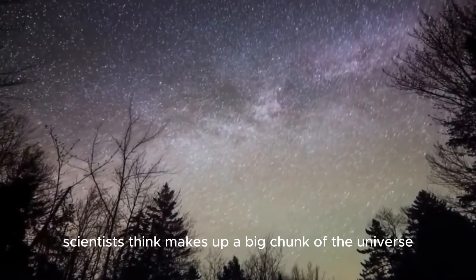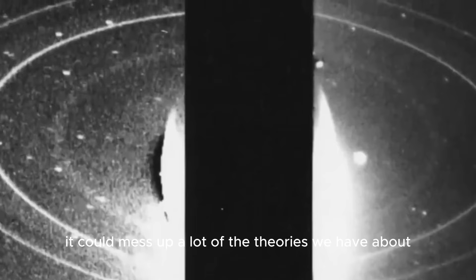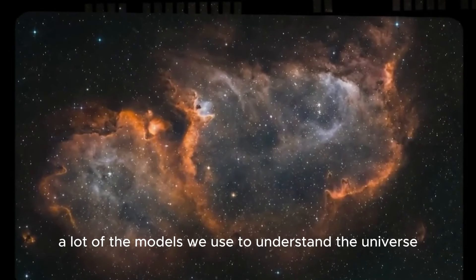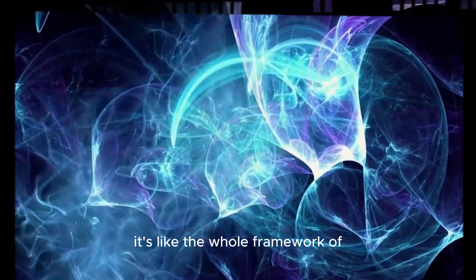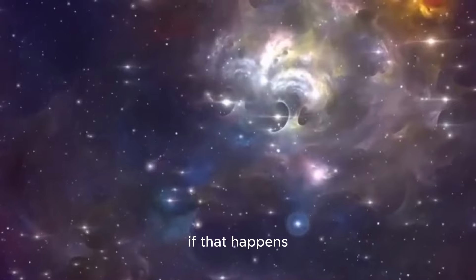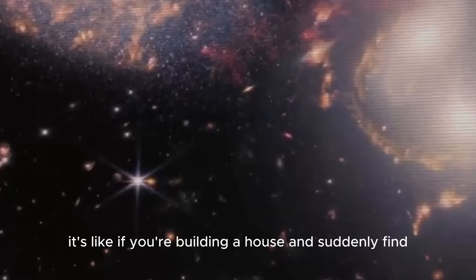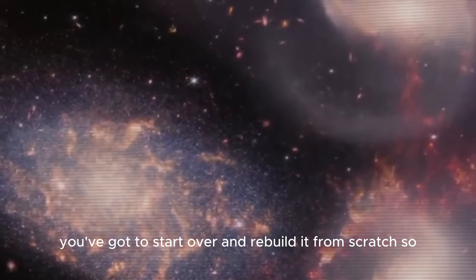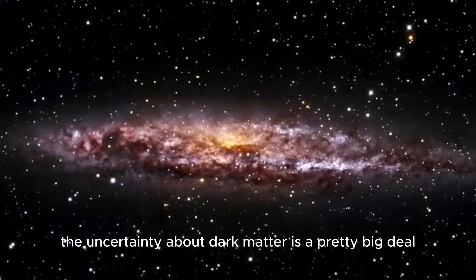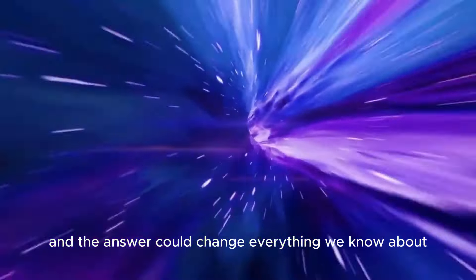So there's this thing called dark matter that scientists think makes up a big chunk of the universe. But here's the thing: we're not totally sure if it actually exists. And if it turns out that dark matter isn't real, it could mess up a lot of the theories we have about how the universe works. See, a lot of the models we use to understand the universe rely on dark matter being there. But if it's not, it's like the whole framework of our ideas about space could fall apart. If that happens, scientists would have to go back to the drawing board and figure out a whole new way to understand the universe and its basic stuff. So the uncertainty about dark matter is a pretty big deal.